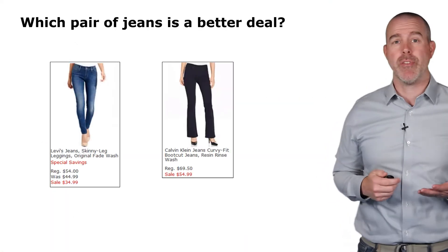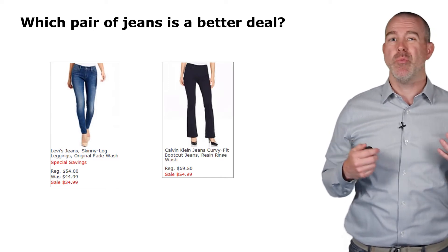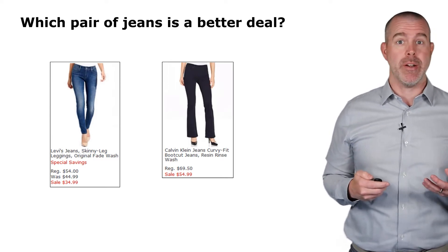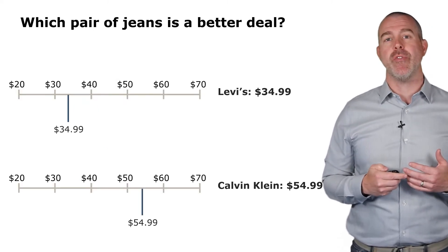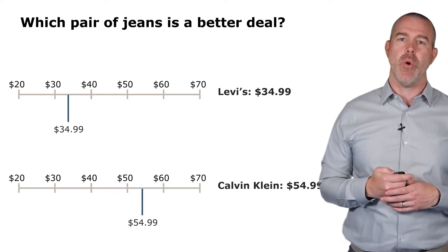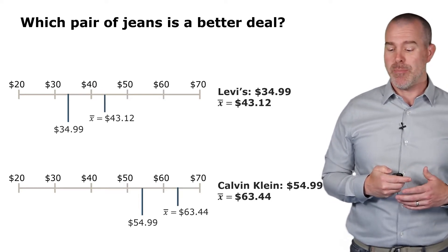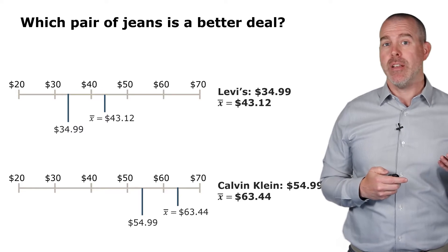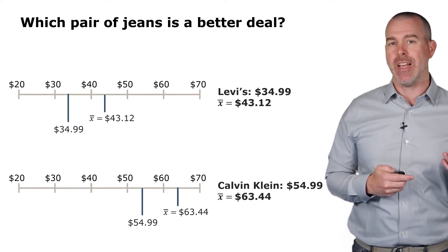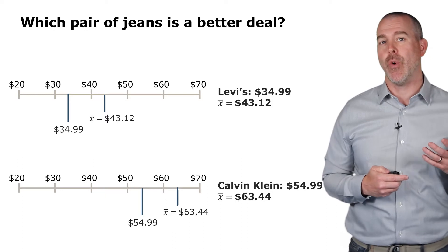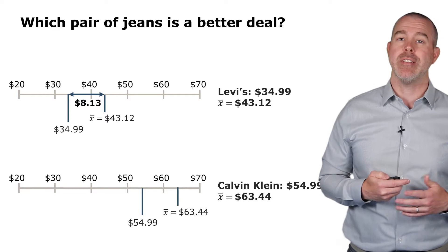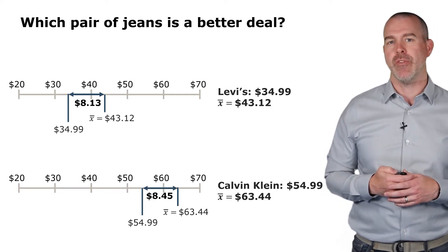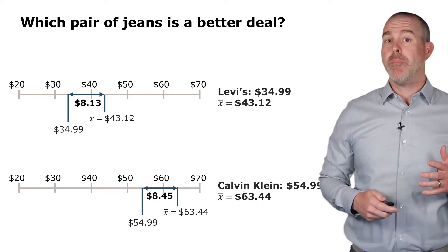We're going to start with an illustrative example. Suppose we have a couple of different pairs of jeans that are on sale, and we want to know relatively which one is a better deal. Let's put them on a scale. We have the Levi's jeans at $34.99, the Calvin Klein on sale for $54.99. The average Levi's price is $43.12, the average Calvin Klein is $63.44. So we could look at the difference from the mean: Levi's $8.13, Calvin Klein $8.45. But there could be more to it.